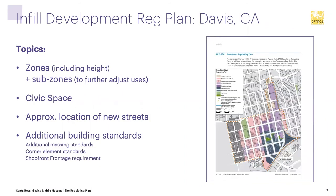The third example, in Davis, California, takes the same approach of coordinating zones with their physical form — including height and other physical characteristics — but it also introduces new civic space intentions and the approximate locations of new streets to create new blocks. It adds massing standards for new buildings to coexist well with existing buildings of a much smaller scale.